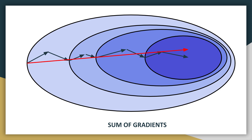Now I'll be introducing a new idea. Let's say we calculated the gradients in our mini-batch gradient descent — these are shown as black arrows. If we take the sum of all these gradients, the vertical components cancel out and we get a net vector in the horizontal direction, shown in red. This net vector points very accurately in the direction of the global optima. This idea of summing previous gradients will be used in the momentum optimizer.